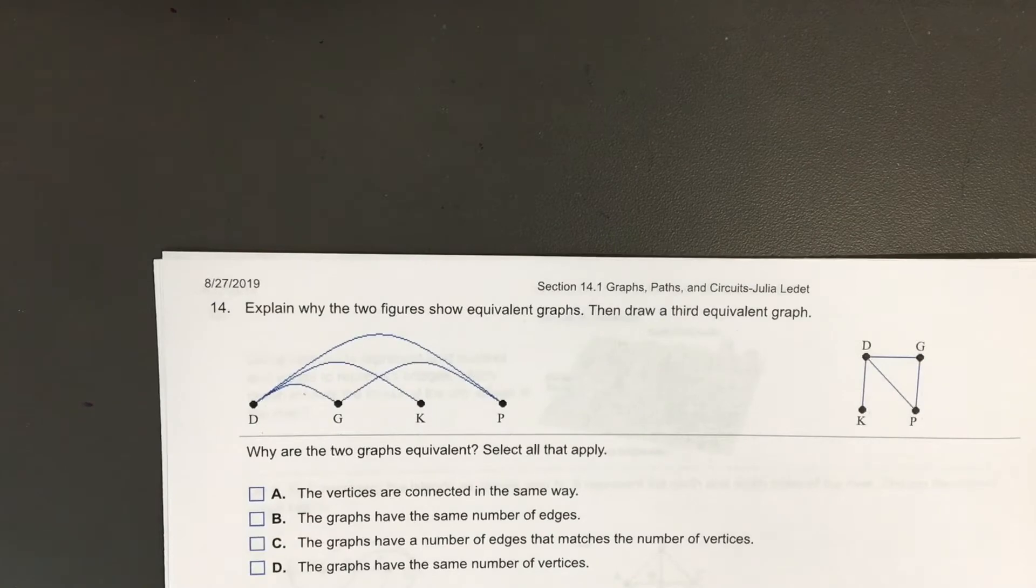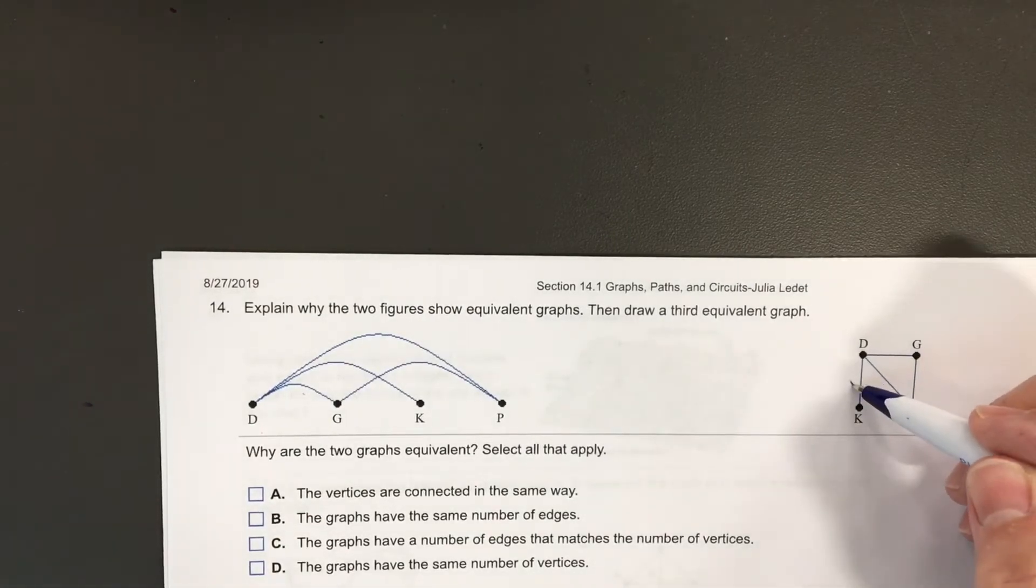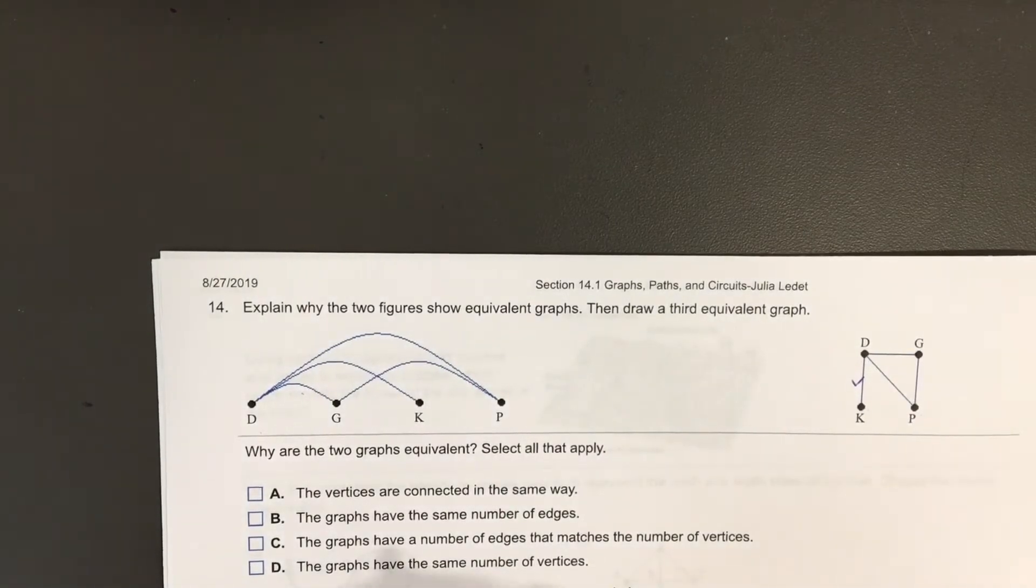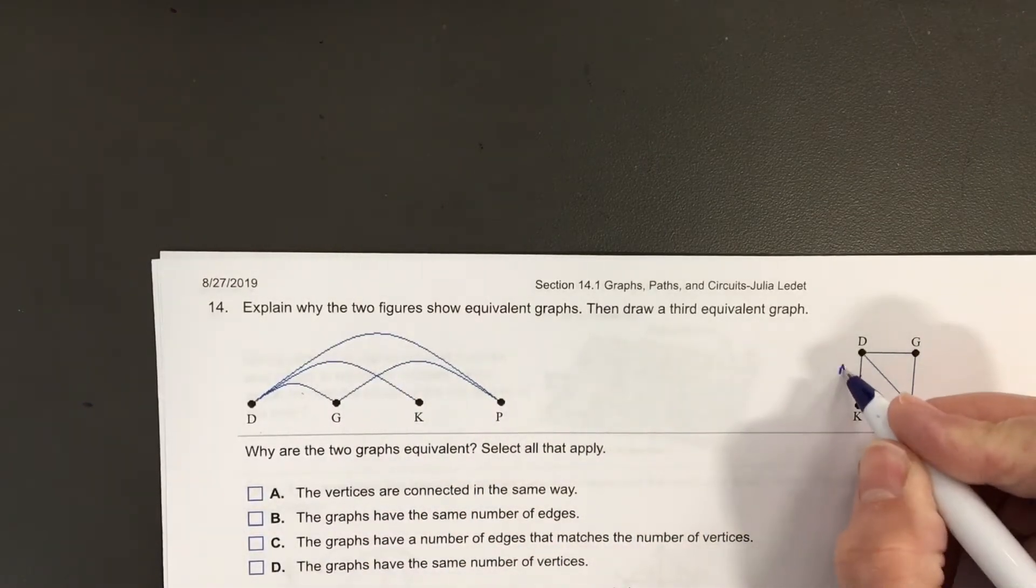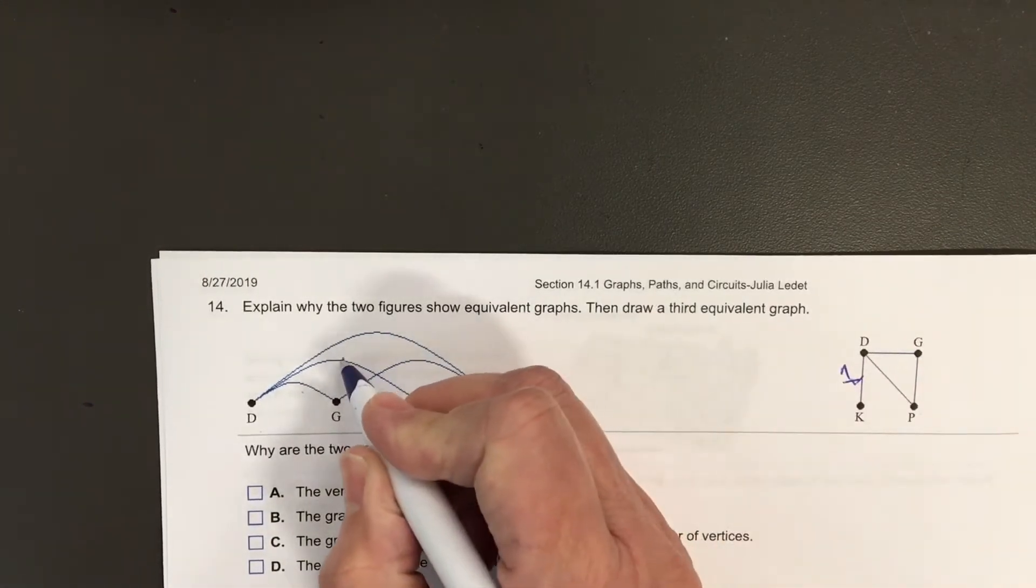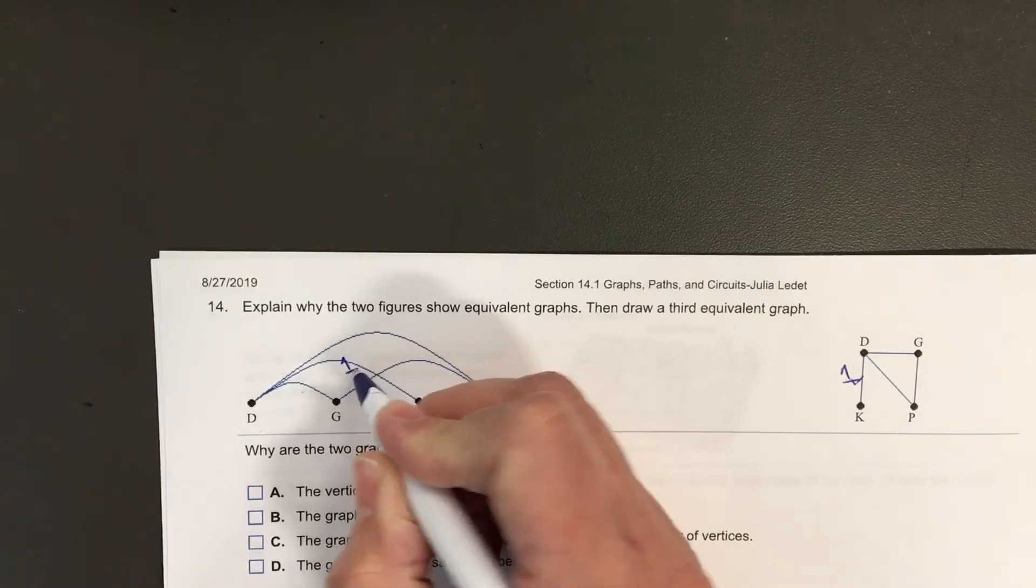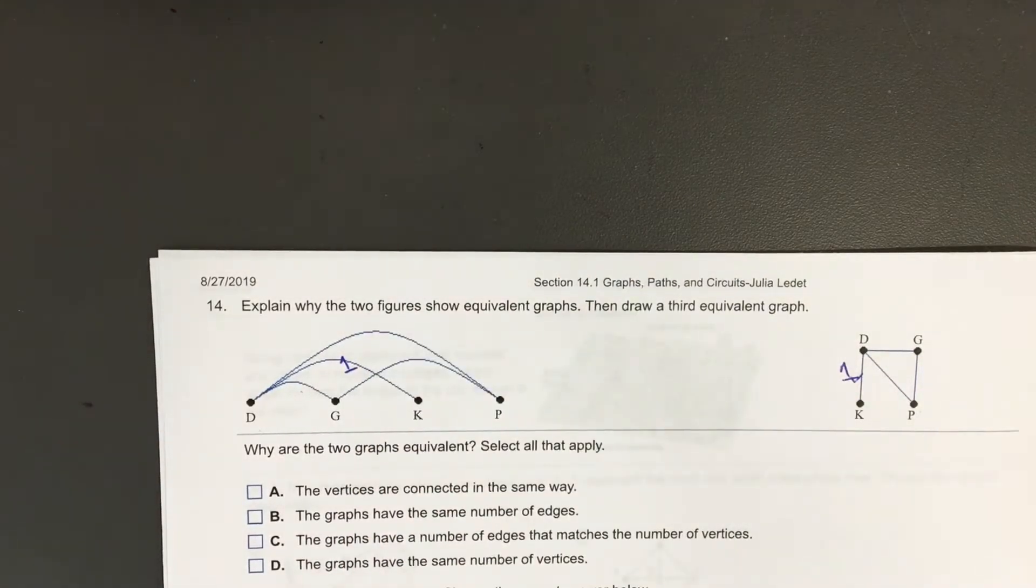I'm going to work from the one on the right. The one on the right has an edge from D to K. Does the one on the left have an edge from D to K? Yes. Maybe I want to number those edges. The numberings don't mean anything in particular. It's just that they're accounted for. I'll put the corresponding edges with the same number.